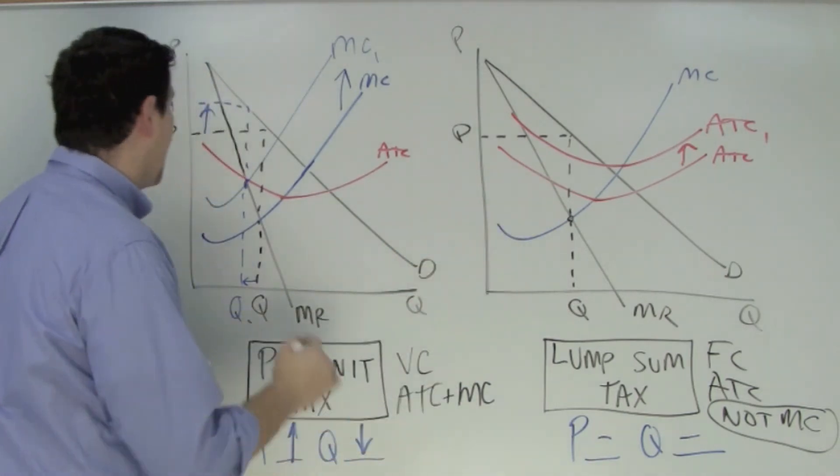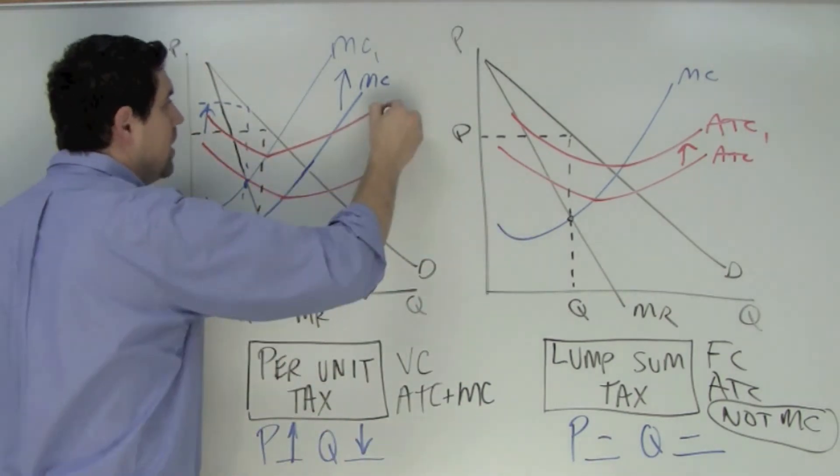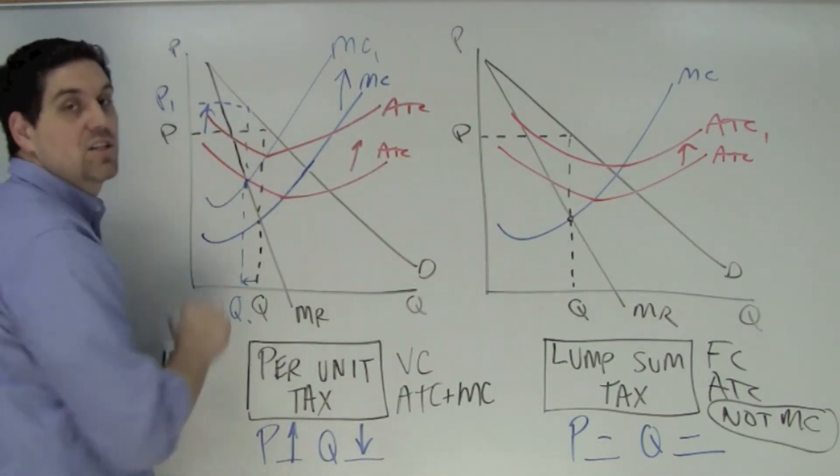Now the ATC is also going to go up. So the box of profit is going to be smaller.